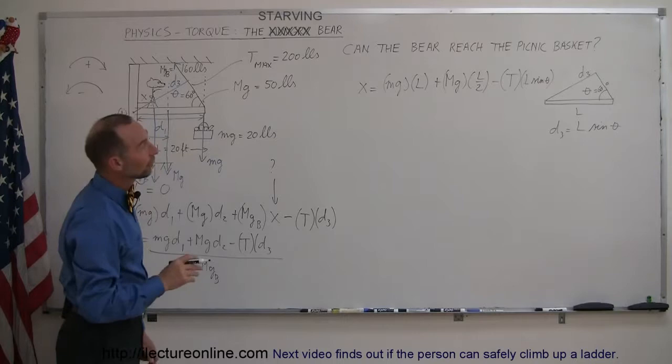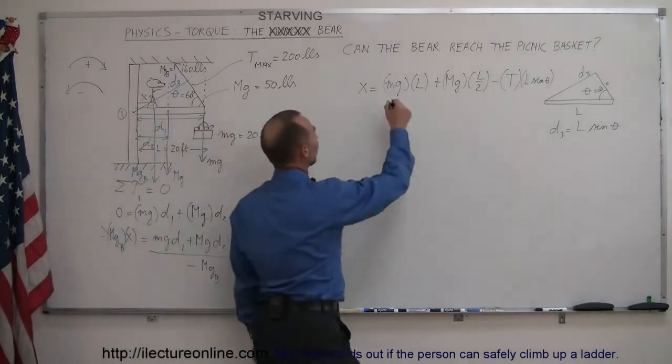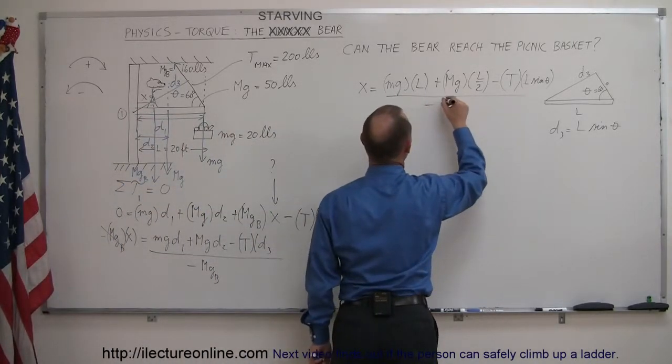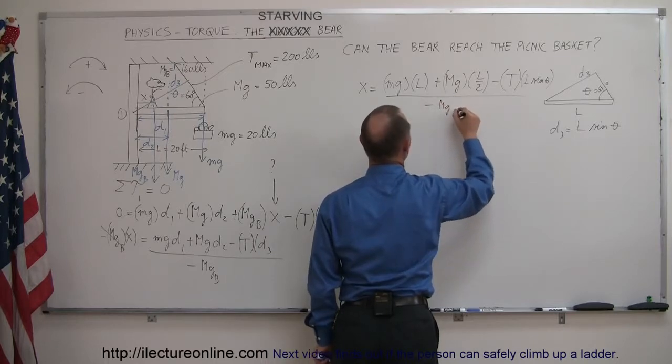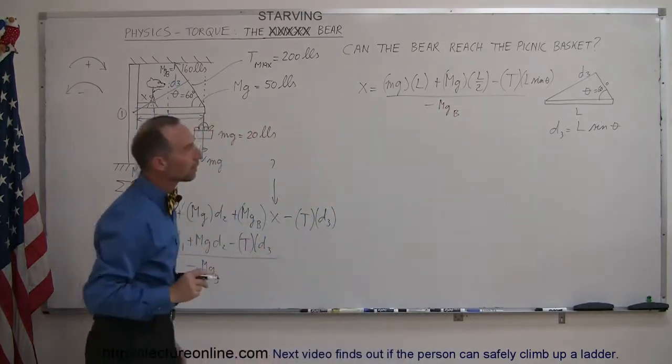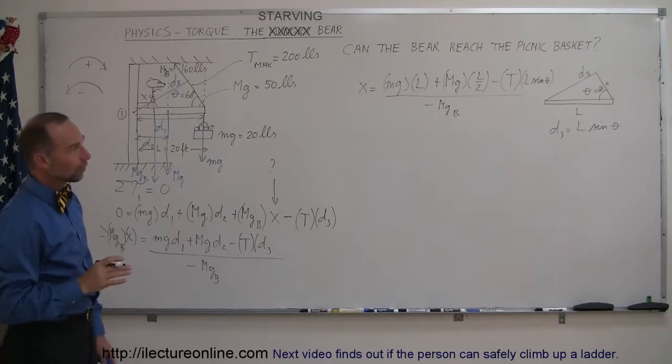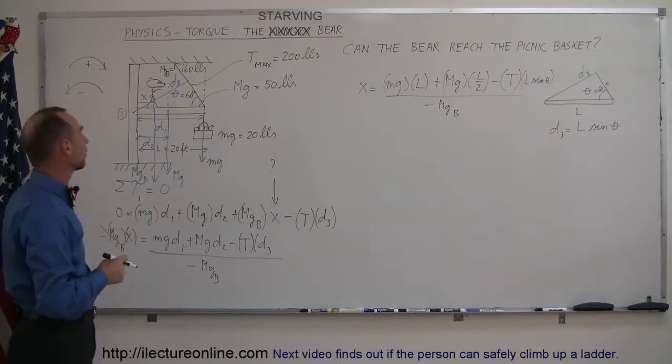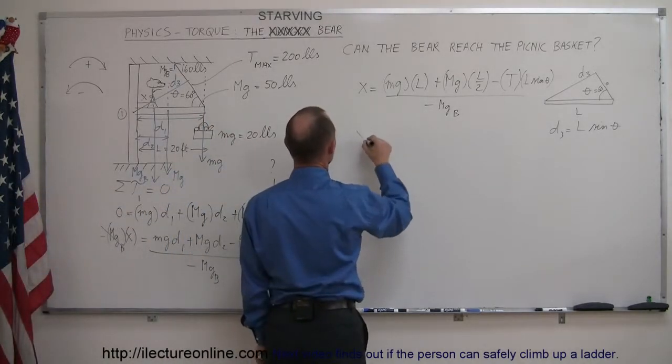Now notice that on the right side, I'm missing one more thing. Minus the mass of the bear, or the weight of the bear. Minus the MG of the bear, can't forget that. So now notice that on the right side of the equation, every term has an L in it. But since I don't have zero on the left side, I can't get rid of that. So let me plug in all the numbers as they are.